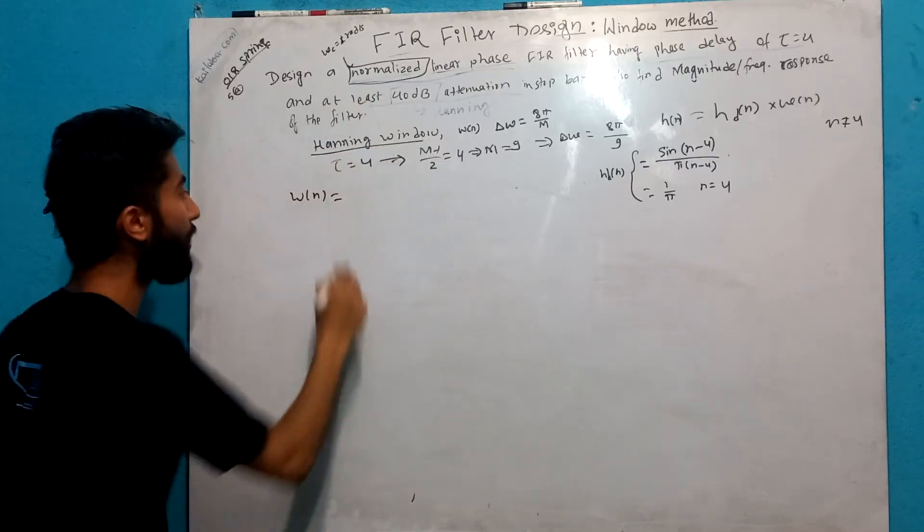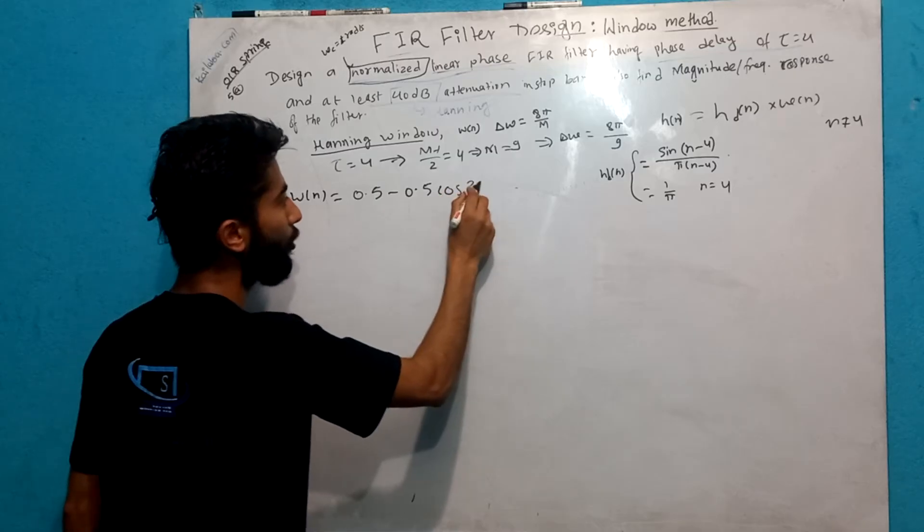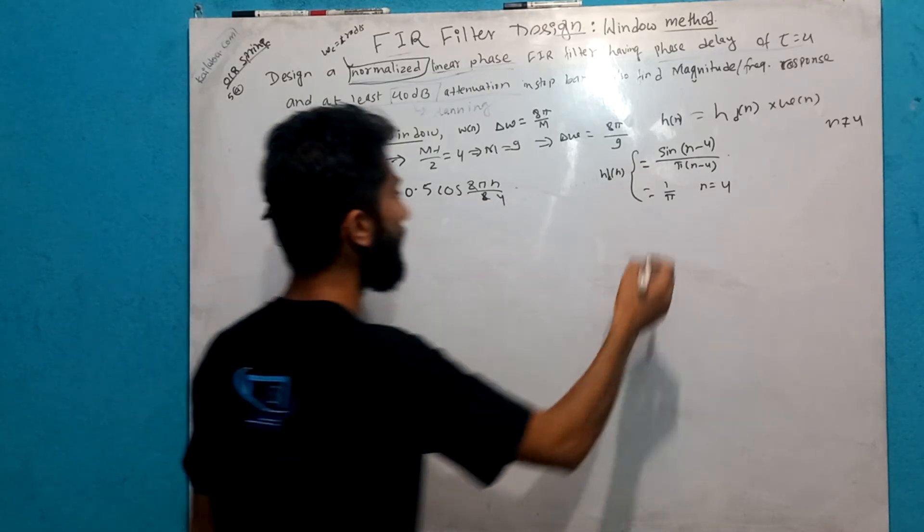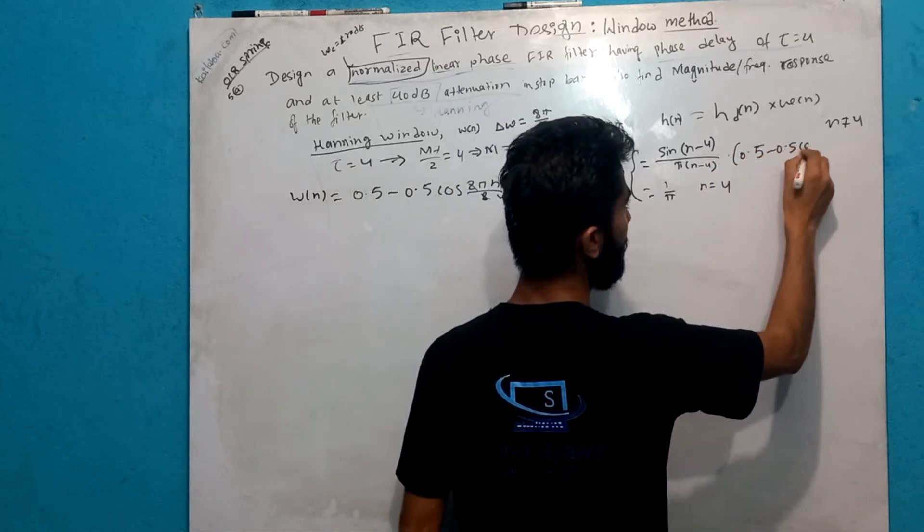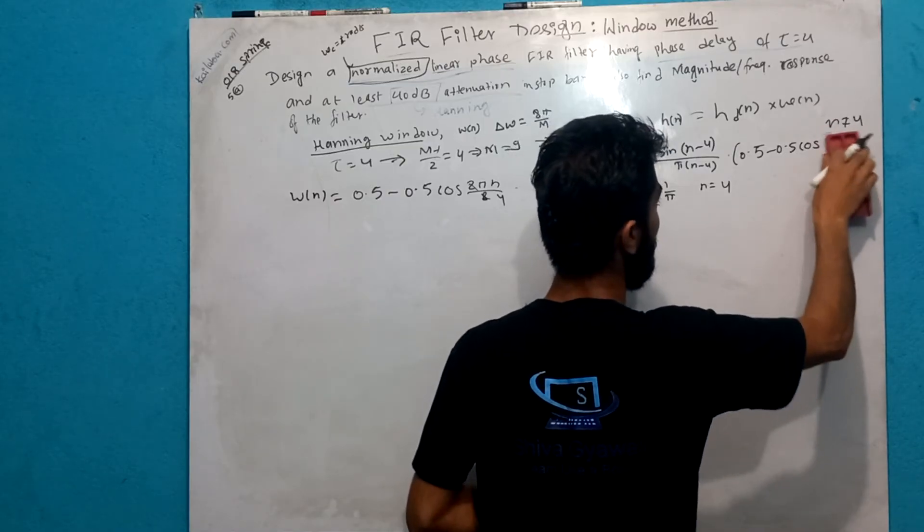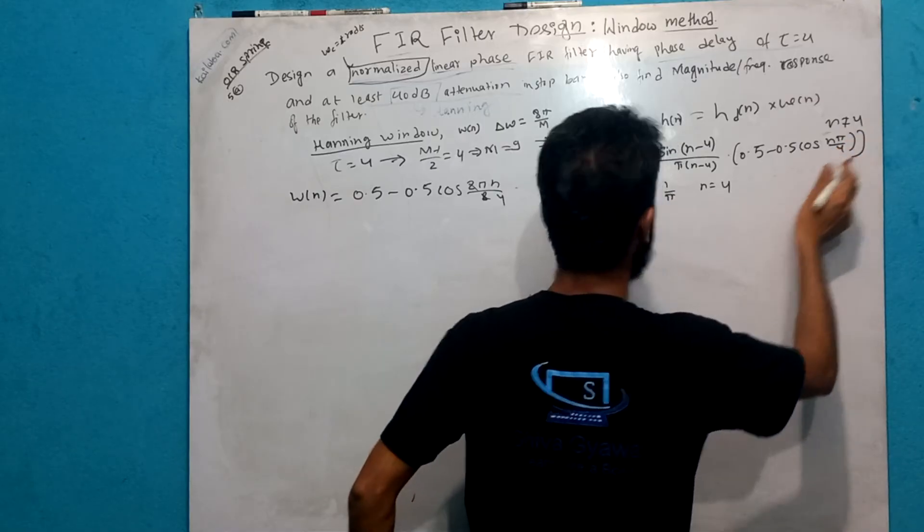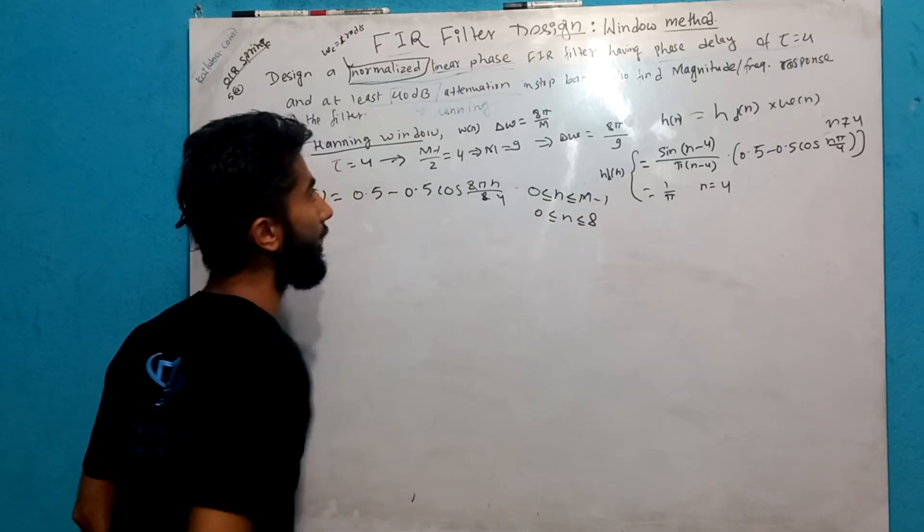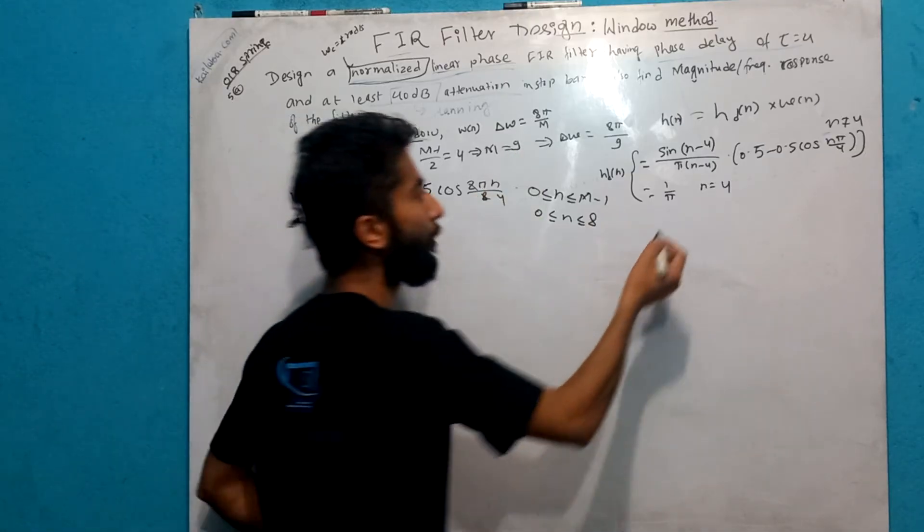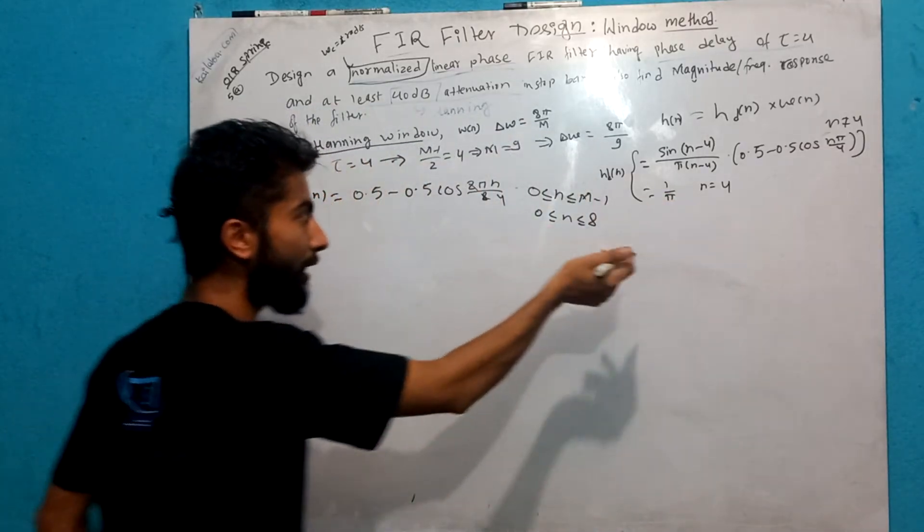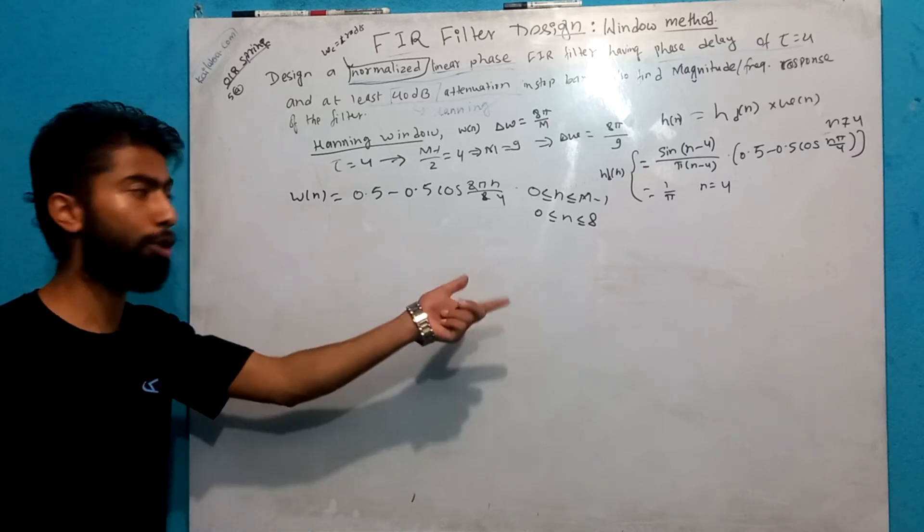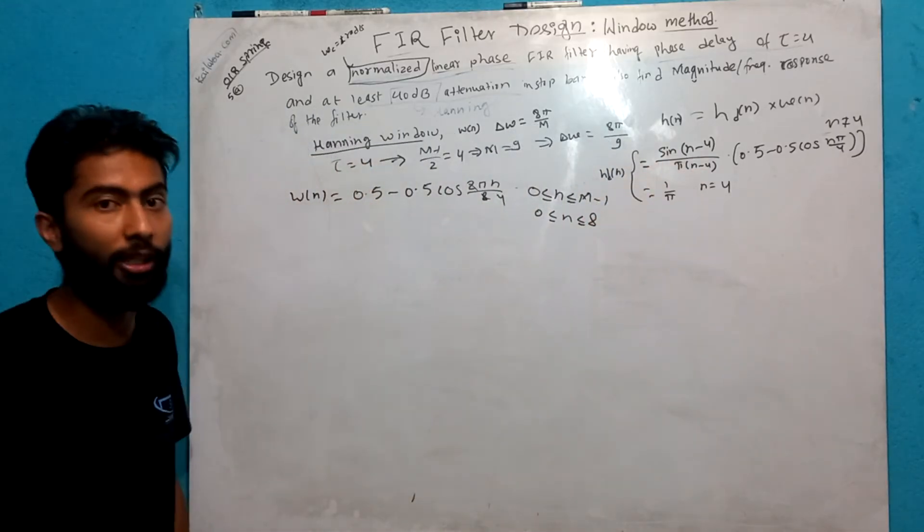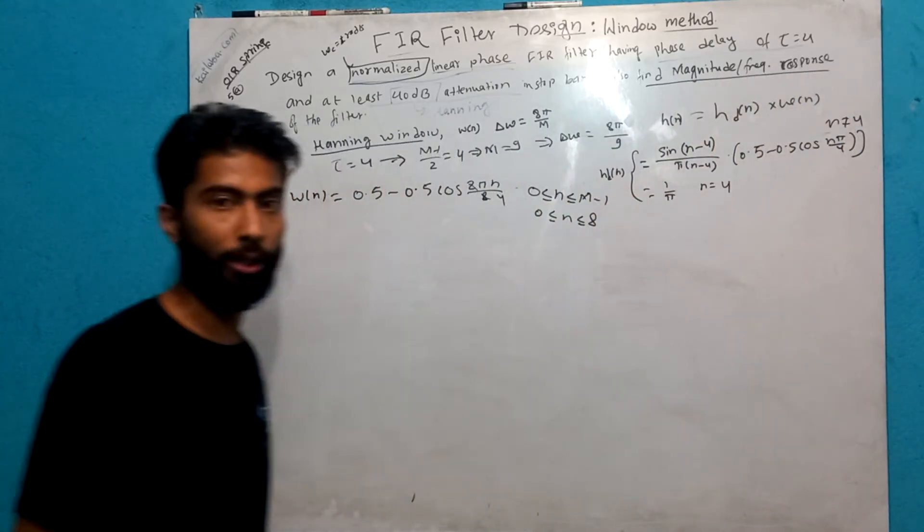I will tell you that h of n equals 0.5 minus 0.5 cos pi n by 4 times sin omega c times n minus tau by pi times n minus tau. This is different, range is 0 to N minus 1, which is 0 to 8. We have to find h of n using the sinc function.